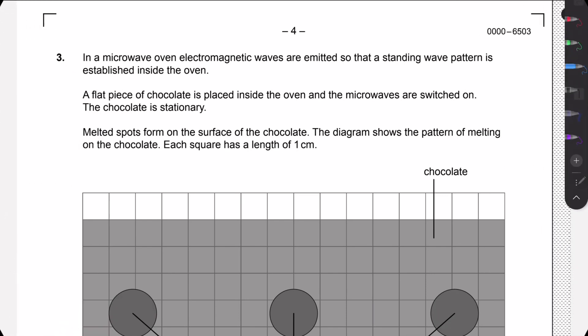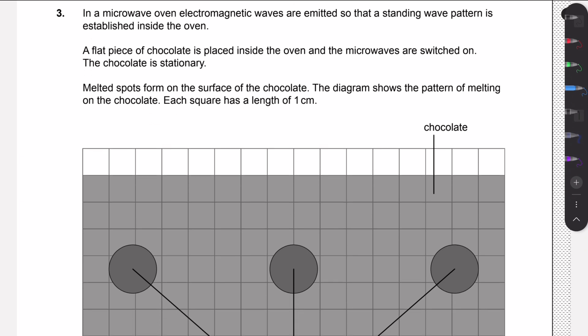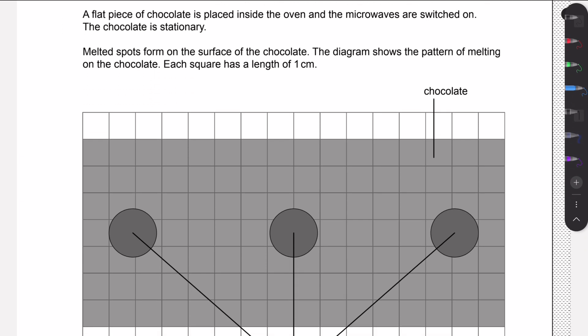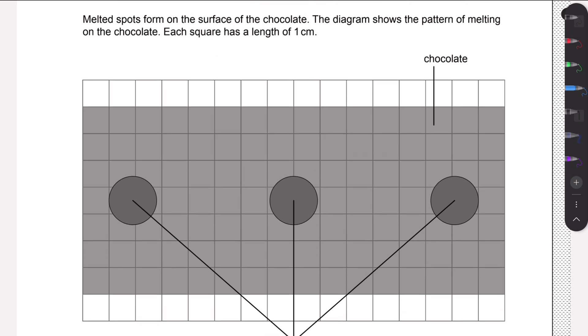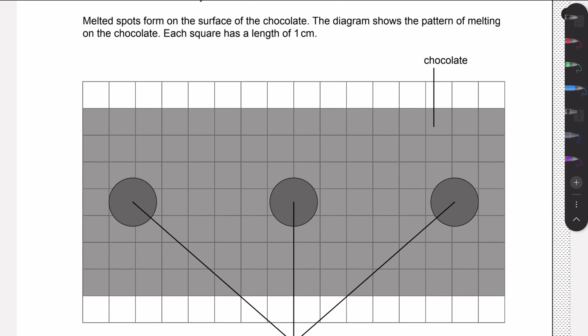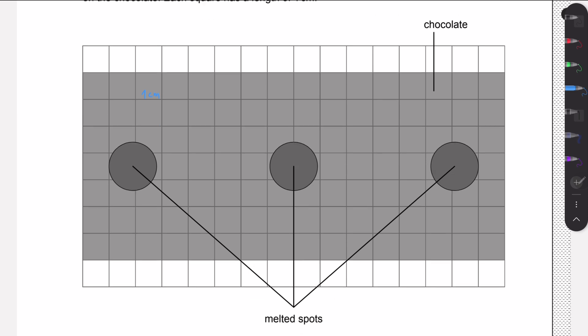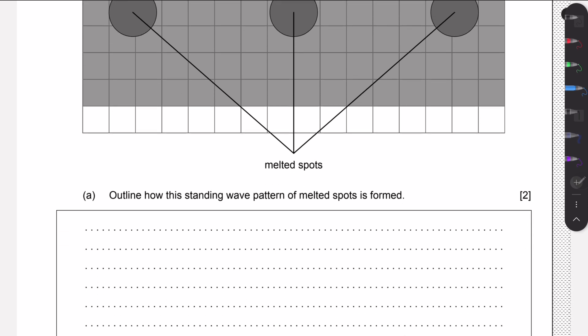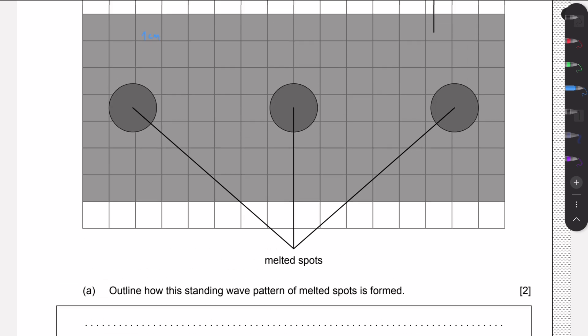Hello guys, welcome to this new video. We're going to go through question 3 in the May 2025 specimen paper 2. We are told that we have a microwave that emits electromagnetic waves and we placed a flat piece of chocolate in it, turn it on, and we have these melted spots being formed on the chocolate.